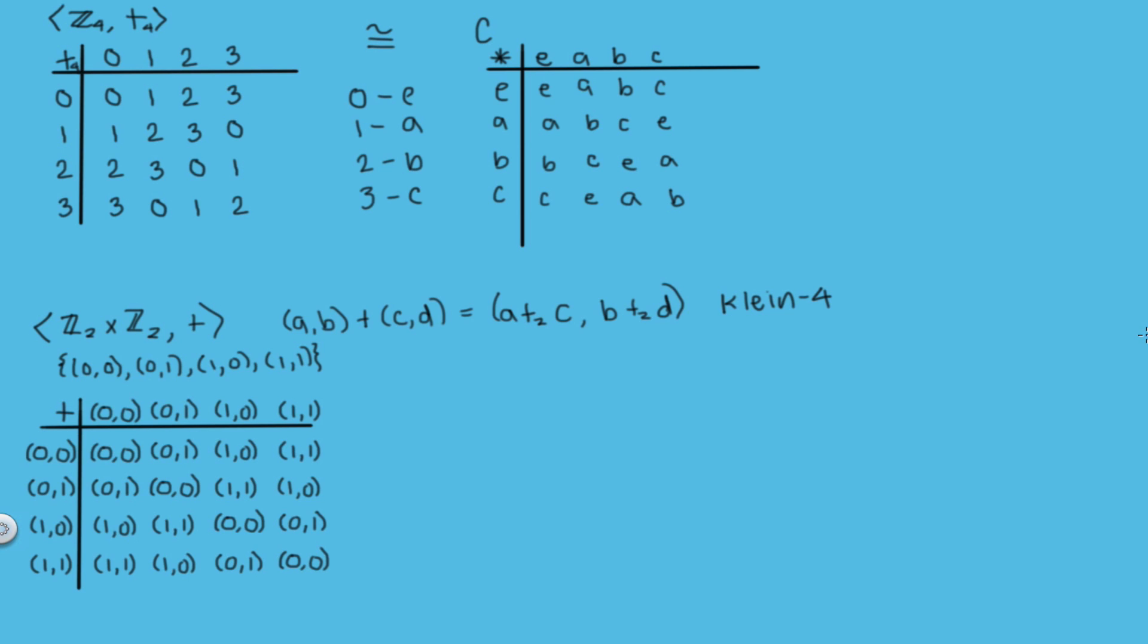And the binary operation table for this addition would look like this. And this group is called the Klein 4 group, and you might see it being represented by a capital V or a K sub 4, these are all just symbols to represent this group, which is called the Klein 4 group. Now if we compare this Klein 4 group to our group B, we can see that by making these changes that these two groups are actually isomorphic.